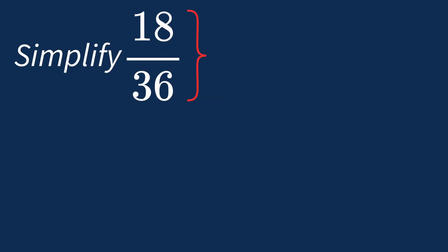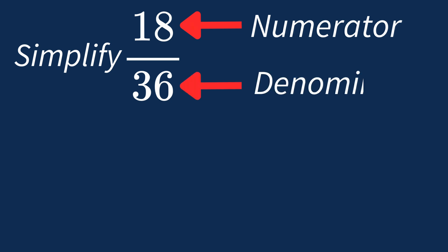To simplify 18 over 36, we need to look for the common factors between the top number, the numerator, and the bottom number, the denominator.